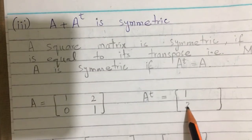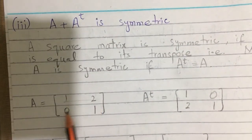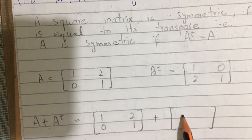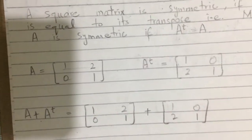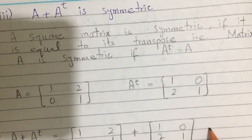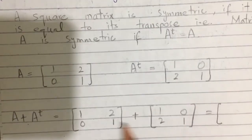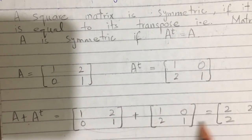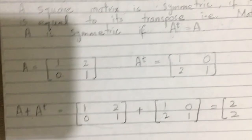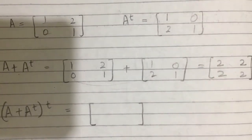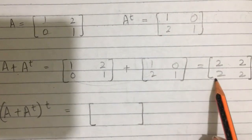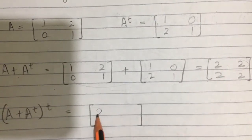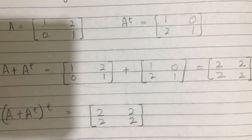So A is [1, 0; 2, 1] and A transpose is [1, 2; 0, 1], changing rows into columns. Now add A + A^T: [1, 0; 2, 1] + [1, 2; 0, 1]. The answer is 1+1=2, 2+0=2, 0+2=2, 1+1=2, giving [2, 2; 2, 2]. Now take (A + A^T) whole transpose: changing rows into columns gives [2, 2; 2, 2].